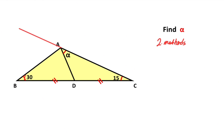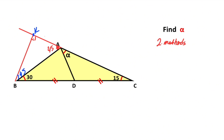This time let's extend corner A. The sum of the opposite interior angles equals 45 degrees. So let's draw one perpendicular line and call this point K. Here is 45 degrees. Therefore we get an isosceles triangle, so if there are two units here, this length must also be equal to two units.